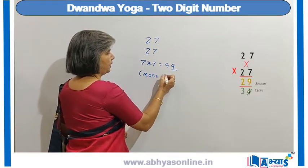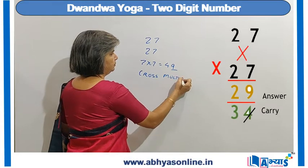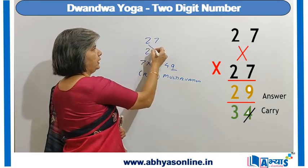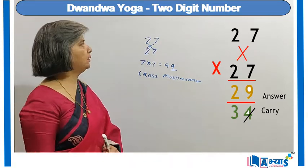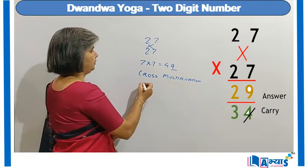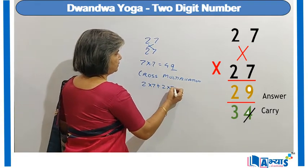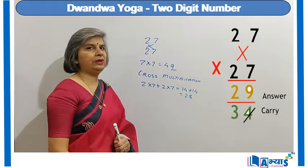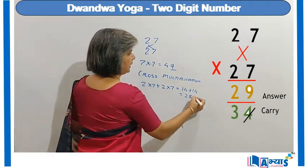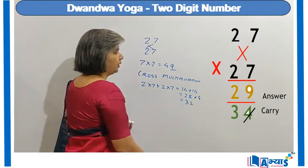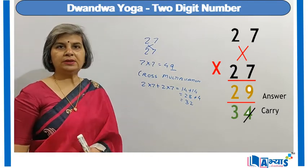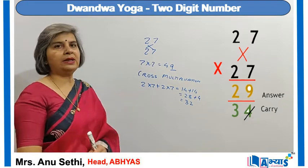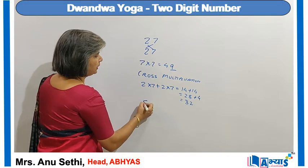In the second step, cross multiplication: I multiply 2 with 7 and this 2 with 7, making a cross. So 2 into 7 plus 2 into 7 is 14 plus 14, giving 28. To this 28 I add the carry of 4, getting 32. Out of 32, the digit at the units place, 2, is placed in the answer, so the answer becomes 29, and the carry is now 3.